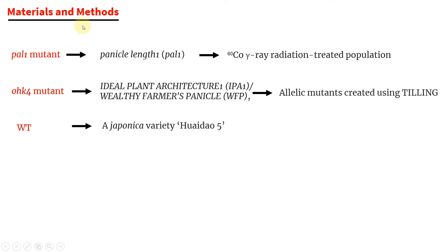I have now switched to the next part — material and methods. Here I have tried to show how you created your mutant, the wild type, the micro-environment conditions, where you planted your plants, and what material or soil you used. It is up to you how you address this slide depending on your own major.